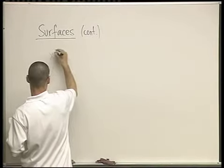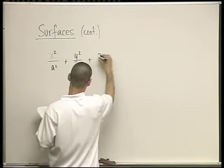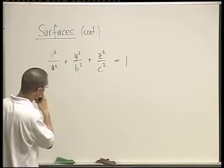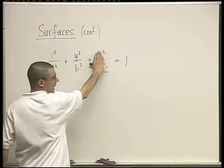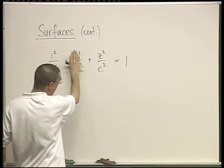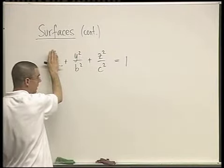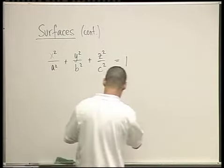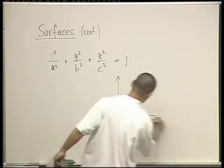Here's the next one: x²/a² + y²/b² + z²/c² = 1. What is this? If we plug in z = 0 we get an ellipse in x and y. If we plug in y = 0 we get an ellipse in x and z, and if we plug in x = 0 we get an ellipse in y and z. So this shape is somehow generated by three ellipses.